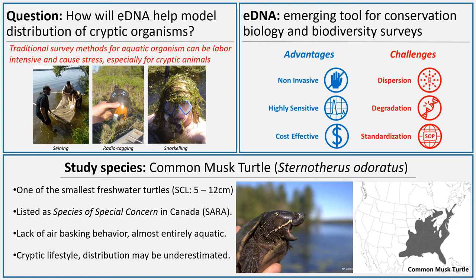Although eDNA does have its own challenges, we're not going to go into details on that today. To introduce the study species of my research, which is the common musk turtle, also known as stinkpot. It has a wide distribution range across eastern North America and extends its northern range limits to southern Ontario, as we can show here. It is one of the smallest freshwater turtles in North America and is under protection at both the federal level in Canada and the provincial level in Ontario.